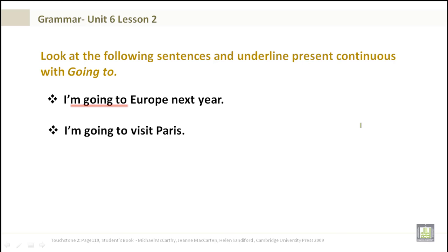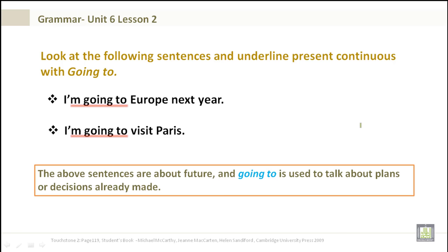I am going to Europe next year. Do you see what's underlined? I'm going to visit Paris. The above sentences are about the future, and going to is used to talk about plans or decisions already made.